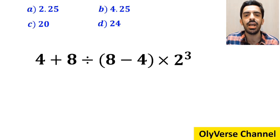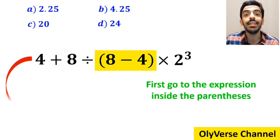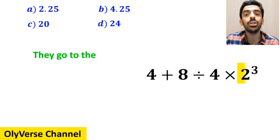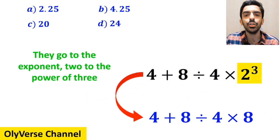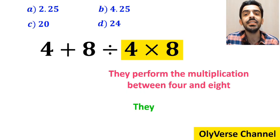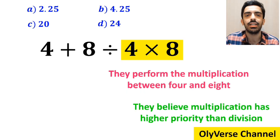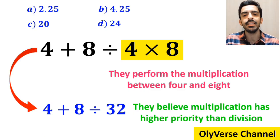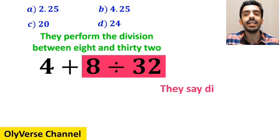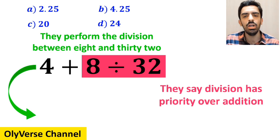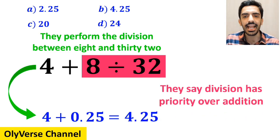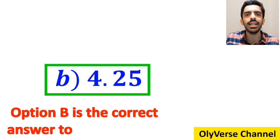Some other people, when solving this question, first go to the parenthesis and write 4 plus 8 divided by 4 times 2 to the power of 3. In the next step, they go to the exponent and simplify to 4 plus 8 divided by 4 times 8. Then, they perform the multiplication between 4 and 8 because they believe multiplication has higher priority than division, writing 4 plus 8 divided by 32. They then perform the division between 8 and 32, simplifying to 4 plus 0.25, which ultimately equals 4.25.